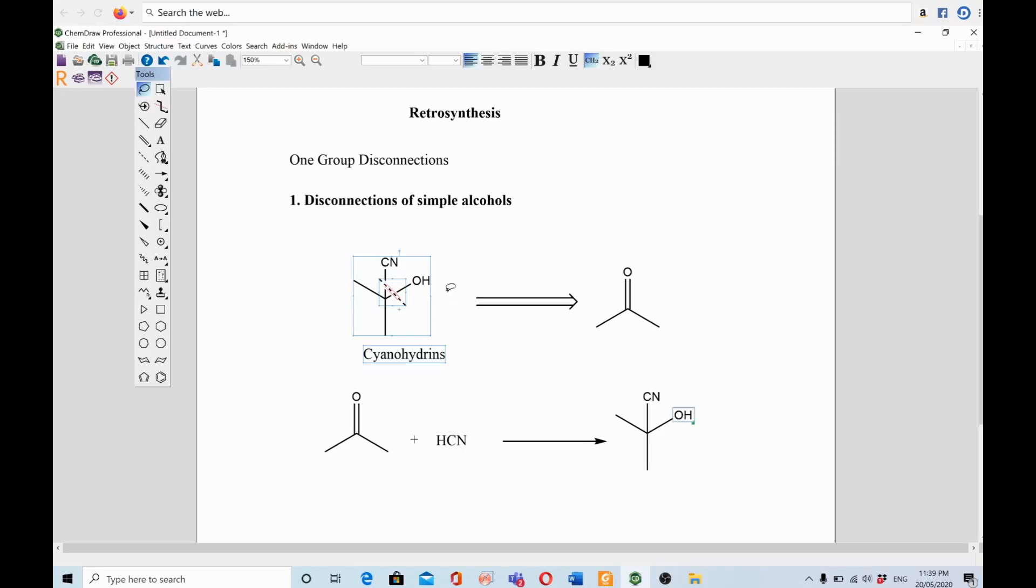The key is to think how you are going to make this molecule before you cut it. You need to think about it - this is the number one strategy. If there is a one-group disconnection, you need to disconnect it from the position where these groups are attached, and then think what will be your starting compound.